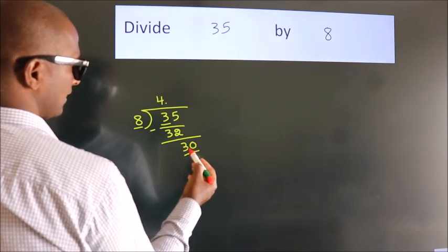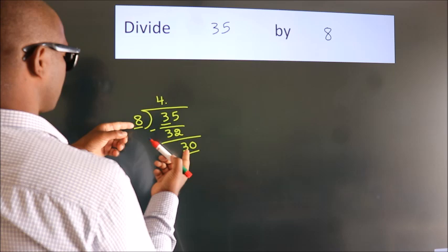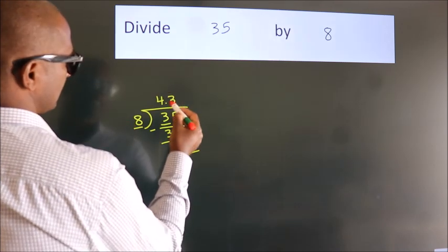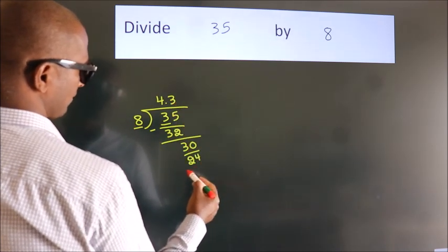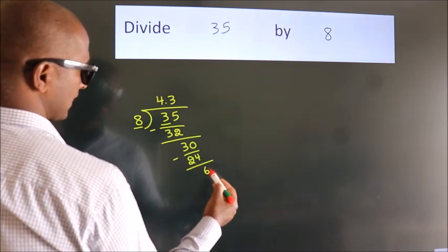So, 30. A number close to 30 in the 8 table is 8 threes, 24. Now we subtract. We get 6.